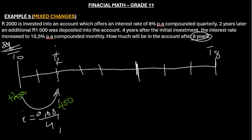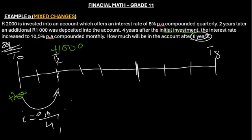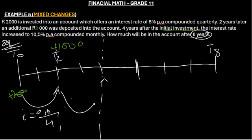Let me write it here: plus 1000, plus 1000 into the account. Then four years later — that is t4 — another change was made. The interest rate here is still 0.08 divided by 4 for these four years.